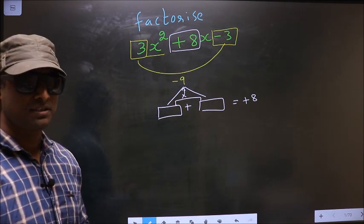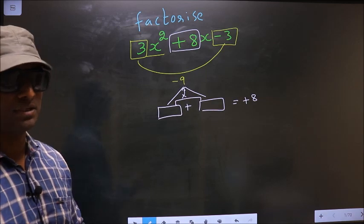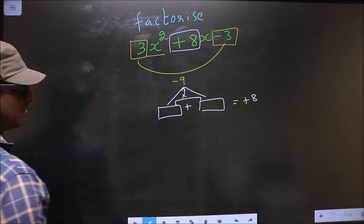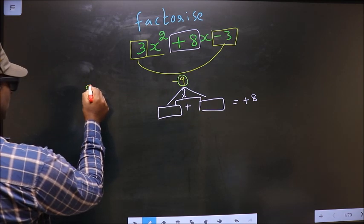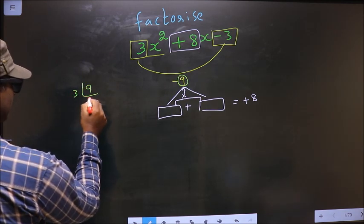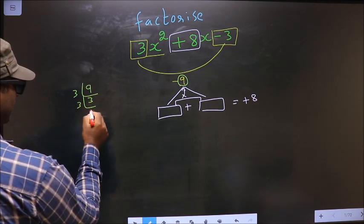To get those 2 numbers, we should take LCM of 9. So 9, that is 3, 3, 3 and 1.